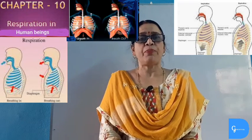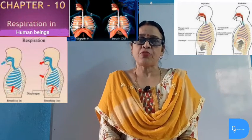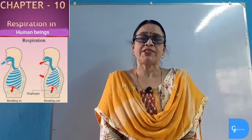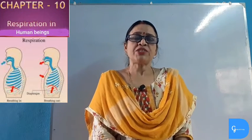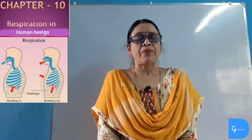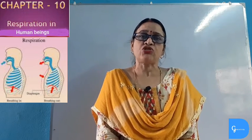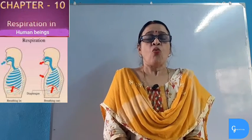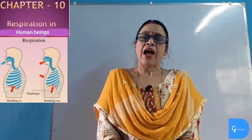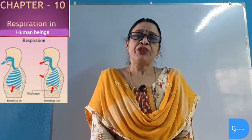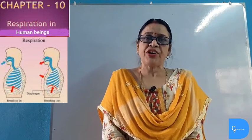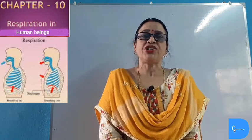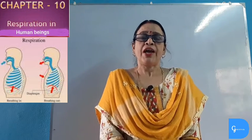Now we will study the mechanism of breathing. Breathing is an involuntary process that occurs automatically, though the rate of breathing can be controlled by a center in the brain. The rate of breathing is the number of times a person breathes in a minute, and this rate differs in different animals. One breath means one inhalation and one exhalation. Breathing involves two processes: intake of oxygen, known as inspiration or inhalation, and elimination of carbon dioxide, known as expiration or exhalation.